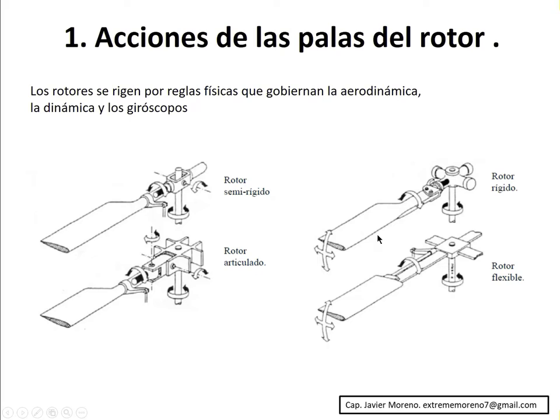The object of this video is to explain the movements that are produced in the blades according to the type of rotor. And as I advance in this explanation, you will be comparing and understanding why a movement is produced in one rotor and in another type of rotor. In general, in the majority of the bibliography, you will see that there are four types of rotors: the semi-rigid rotor, the articulated rotor, the rigid rotor, and the flexible rotor — each one with its particularities.